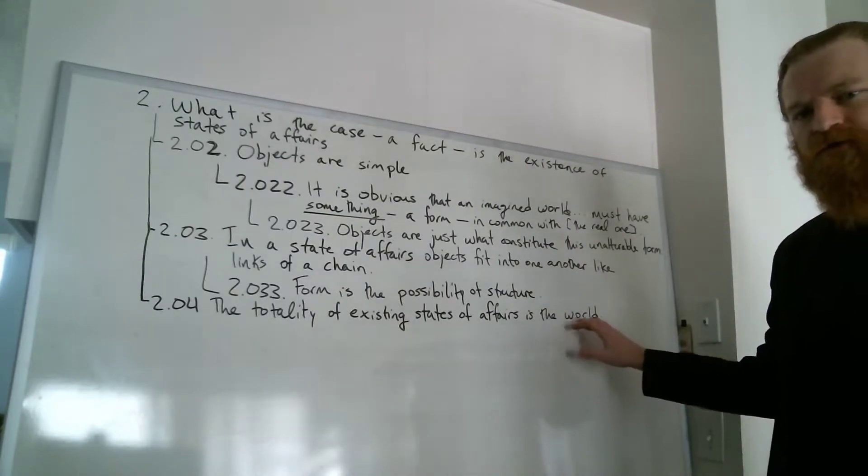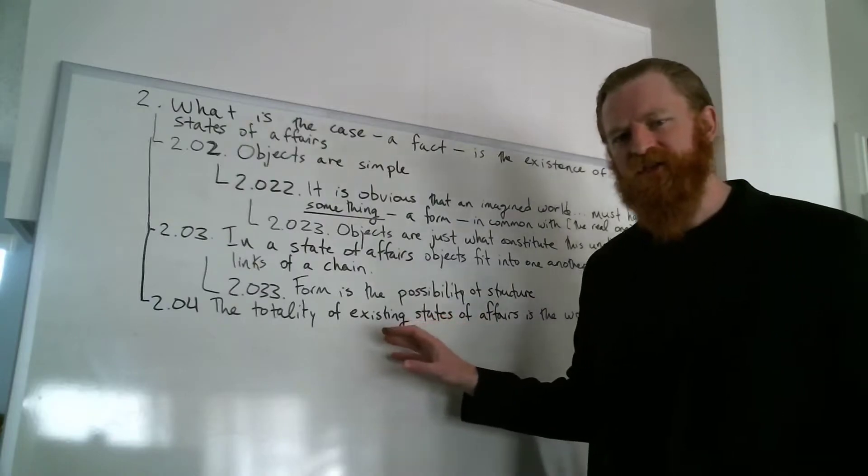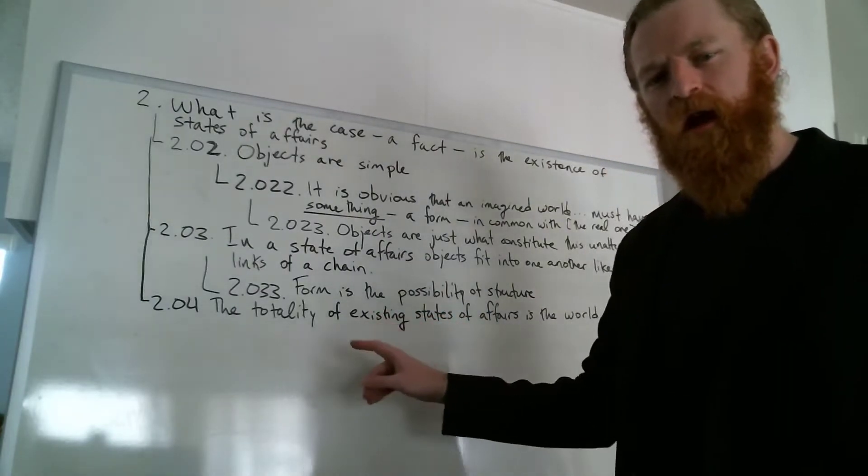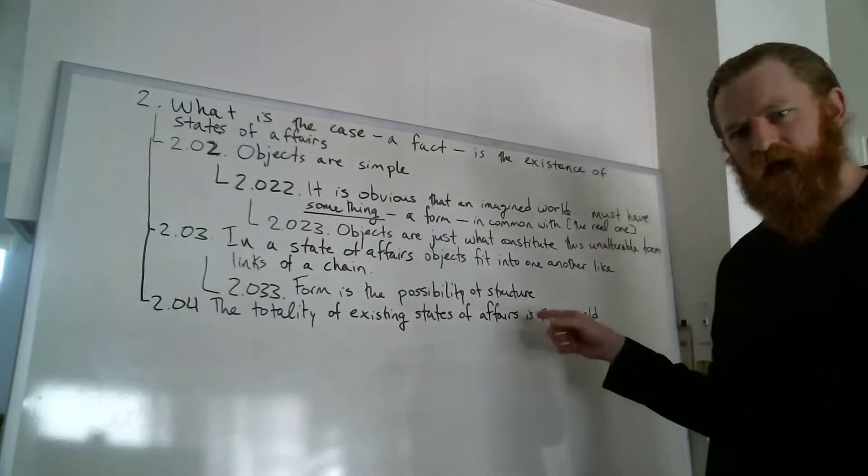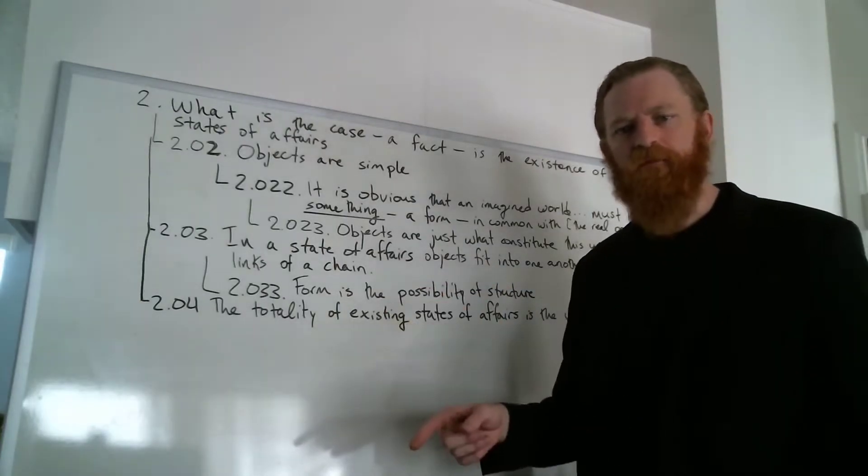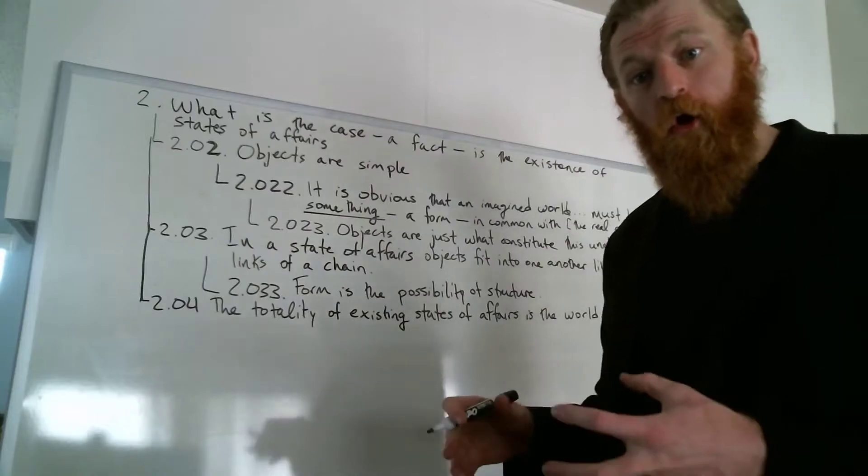This is Wittgenstein's answer: the totality of existing states of affairs is the world. Now just like many of the propositions in Wittgenstein's book, it might appear to be trivial or very uninformative, but we'll see that it's actually making some pretty strong statements when we unpack it.